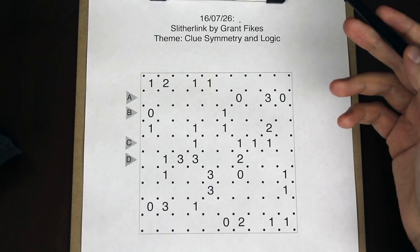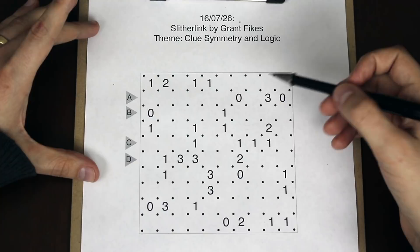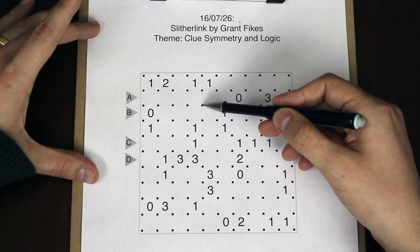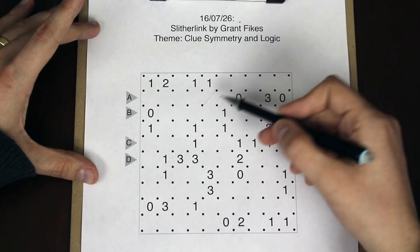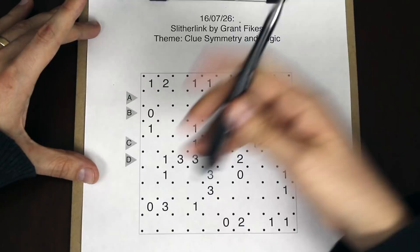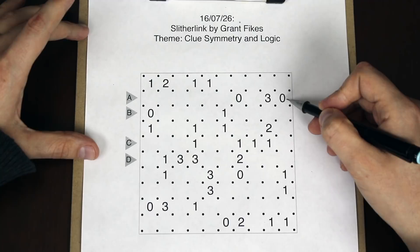Slitherlink is a path type puzzle, so what we're going to be doing is drawing a path around the grid, subject to a few conditions. The first is that we can only draw paths horizontally or vertically, between one dot to another dot. We can't draw a path diagonally — that's not allowed. We need to make one single closed loop. Each square with a number in it has exactly that number of segments around it.